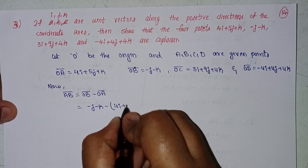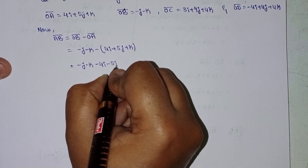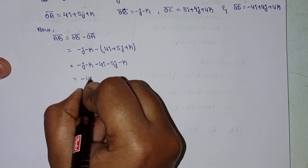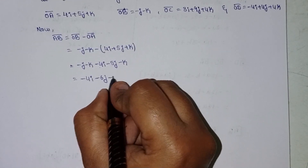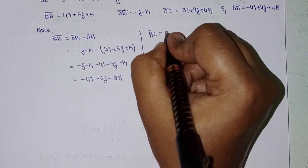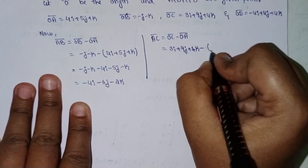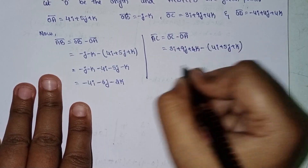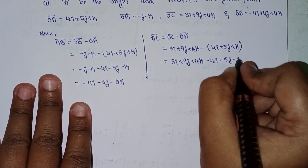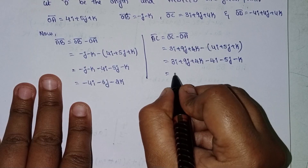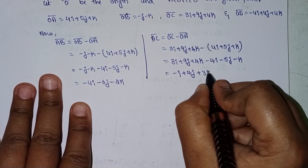AB = -4i - 6j - 2k. Next, AC = OC minus OA = (3i + 9j + 4k) minus (4i + 5j + k). So 3i minus 4i is -i, 9j minus 5j is +4j, and 4k minus k is +3k. Therefore AC = -i + 4j + 3k.